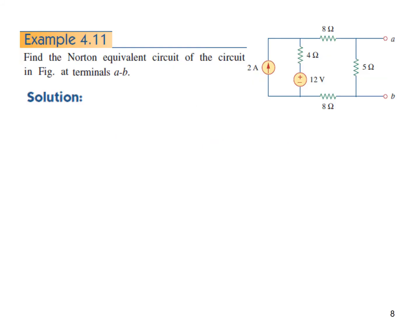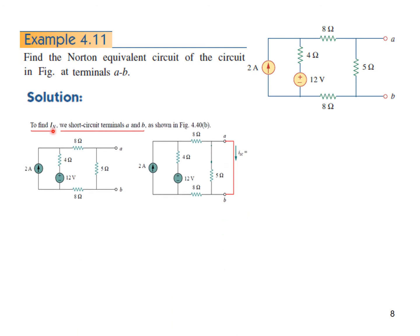Now let's do example 4.1. We have to find the Norton equivalent circuit at terminal AB. Since there is no load here, there is no need to disconnect anything — we just need to find the current at this point and the resistance. To find IN we short circuit terminal AB. Any current from here will pass directly through the short circuit and will not go into the 5 ohm resistance, because current chooses the lowest resistance path. So the 4 ohm resistance is of no use and we can remove it.